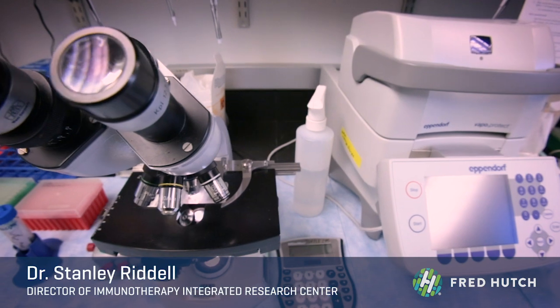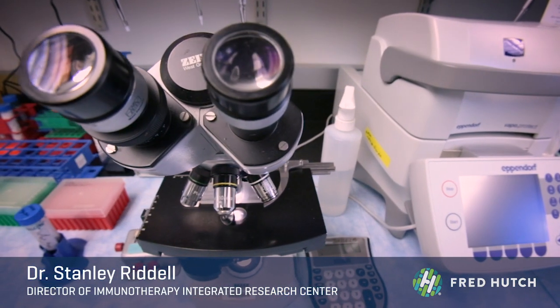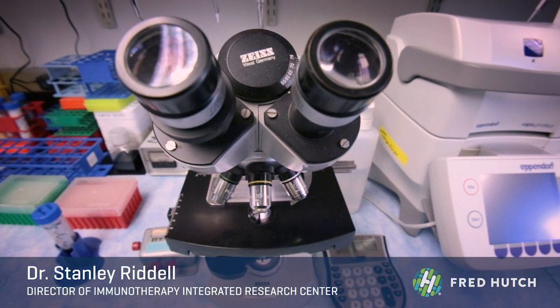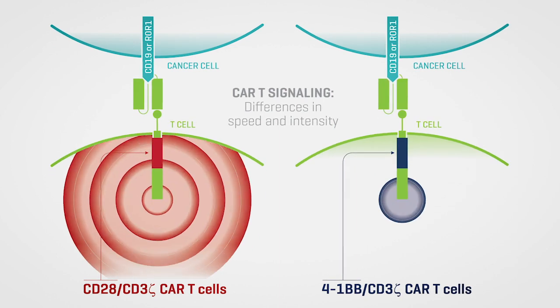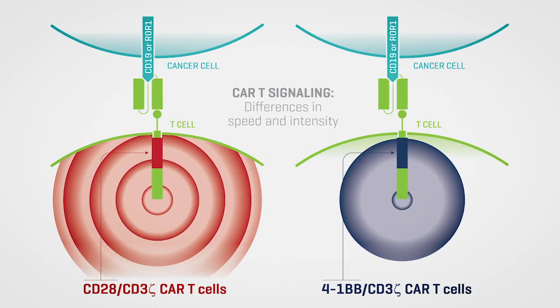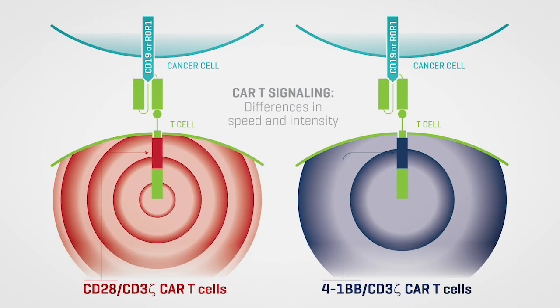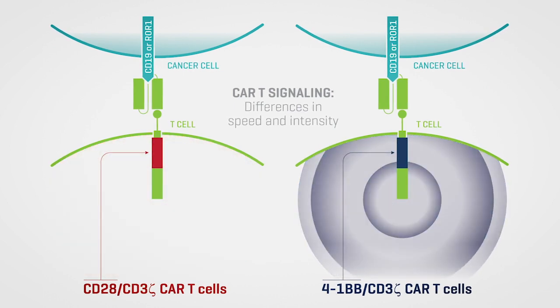One of the major findings of this paper was that different receptors can signal with very different strength and with different kinetics. When we took those cells with those receptors and put them into animal tumor models, the cells behaved differently. Some receptors conferred more rapid cell division but also more susceptibility to losing their ability to function — to sustain function against a growing tumor.